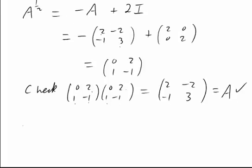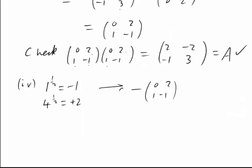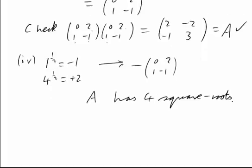And of course the final choice will be where we take 1 to the half equals negative 1 and 4 to the half equals positive 2. This will just give us the negative of the answer we just got, so negative 0, 2, 1, minus 1. A has 4 square roots, and we were able to find them all by our Cayley-Hamilton method.